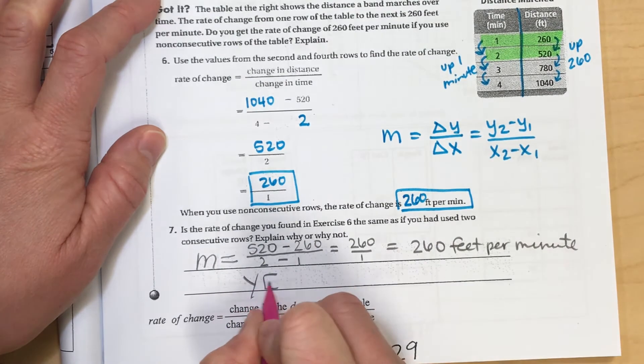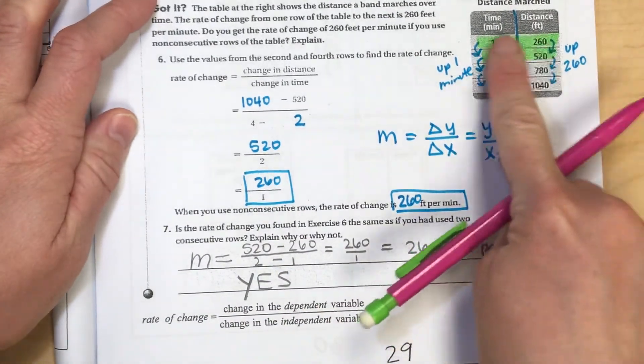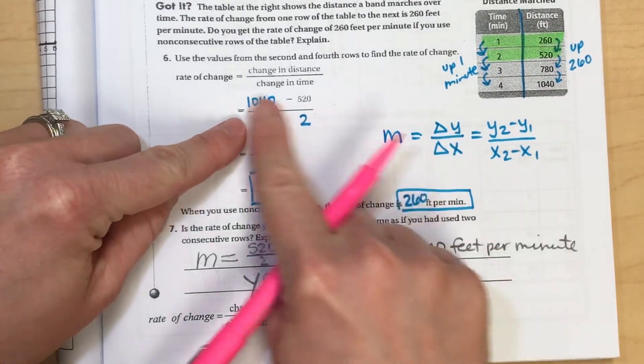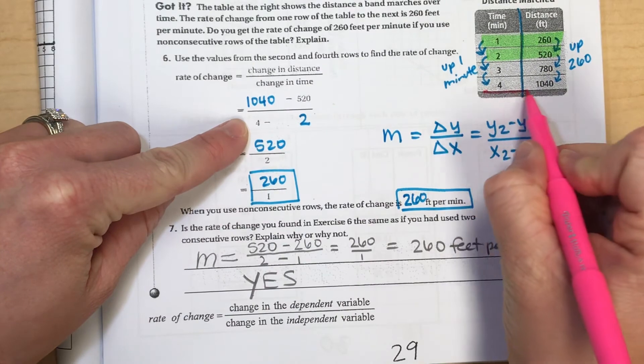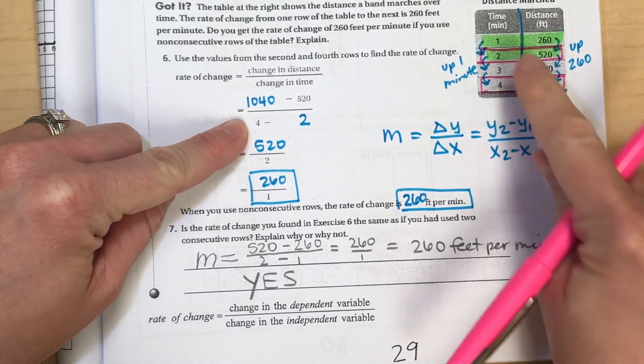Which yes, is the same slope, whether you use two points that are connected right together, or if you had used like this example showed points that were not close together in the table, we use two and four.